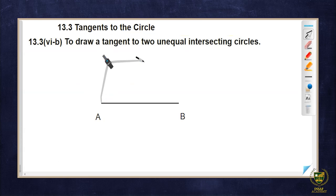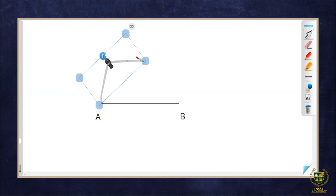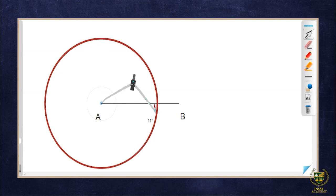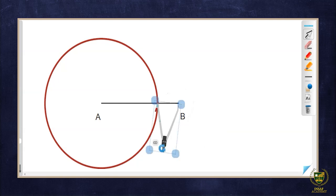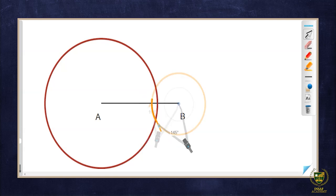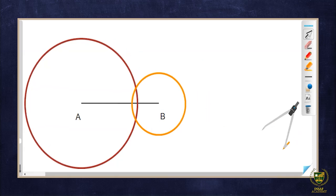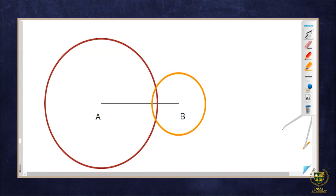I place the compass at A and draw one circle. This is the first circle. Now I need to draw another circle at vertex B that intersects the first circle. For touching circles we opened the compass to the boundary, but now we need to open it slightly more so the circles intersect. Now this second circle is drawn — A is the center of the first circle and B is the center of the second.